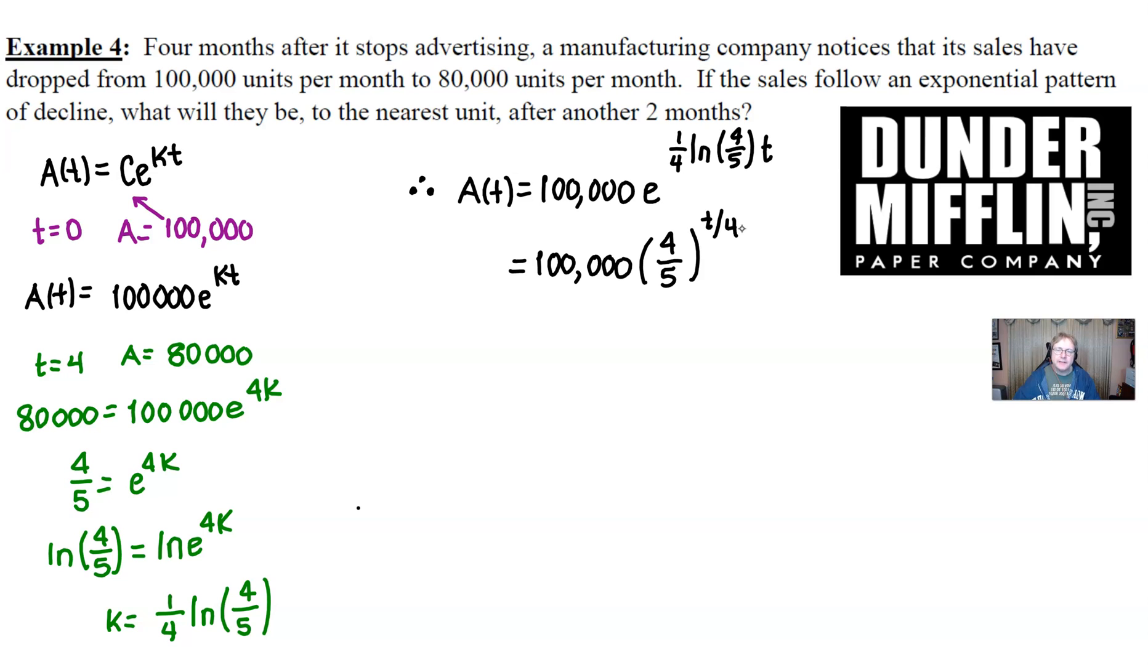I think at this point we can answer our question. It asks, if the sales follow this pattern, what will they be to the nearest unit after another two months? Well, there's a little bit of a trick. The common misconception might be to plug two in for T. And that is incorrect. We have to look very carefully at a very provocative word here. Another two months, which means we're going to go an additional two months beyond that four months. Many of you are probably already on top of this, and you see that the T is actually going to be a six.